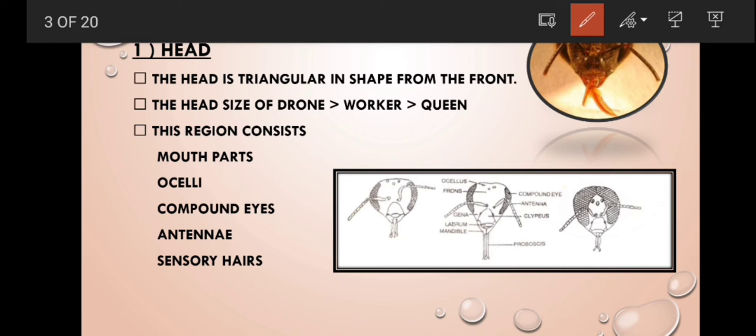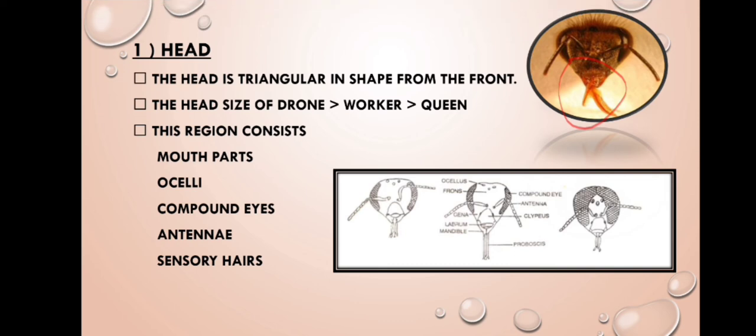Head is triangular in shape from the front side. The head size varies among drones, workers, and queens. The head region consists of mouth parts, ocelli, compound eyes, antenna, and sensory organs.